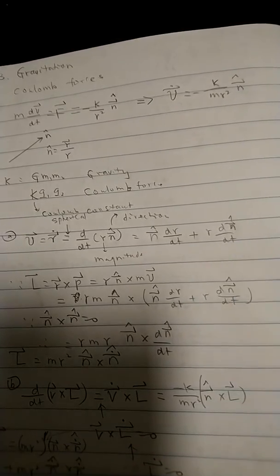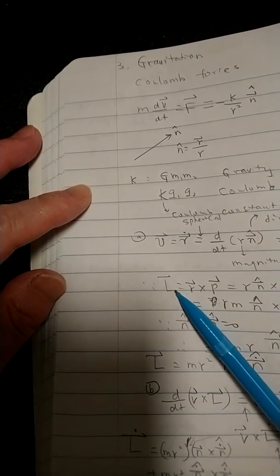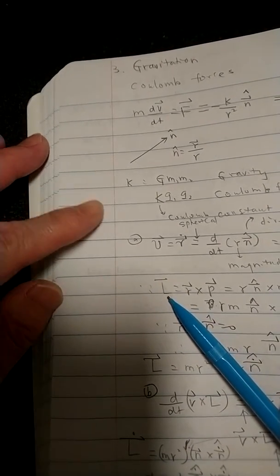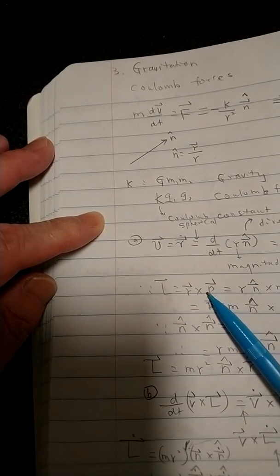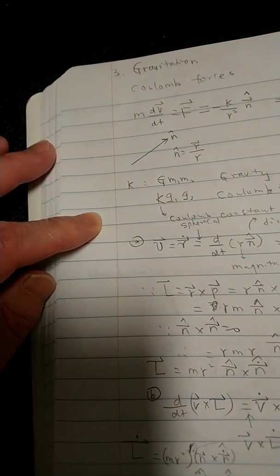Second one is the direction change. So these two terms will come out. That gives you the velocity. Once we have velocity, so then we look at the orbital angular momentum. So this is just r cross p. We know p is just mass times velocity.